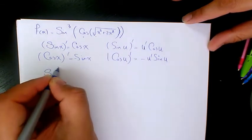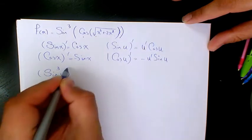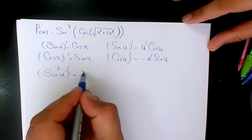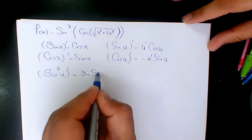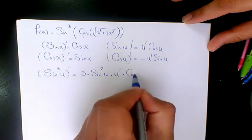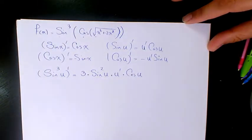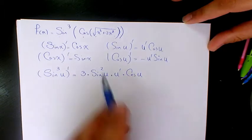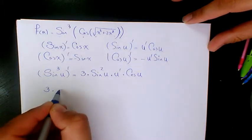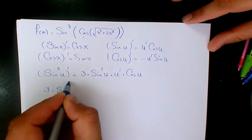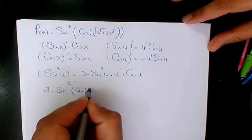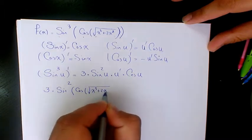Another thing I need to mention: when you have sine to the power of three of u and you want to find its derivative, it is going to be three times sine squared u times u prime times cosine u. That's how we do it. For example, in this problem it's going to be three times sine squared of cosine of square root of x cubed plus two x squared.